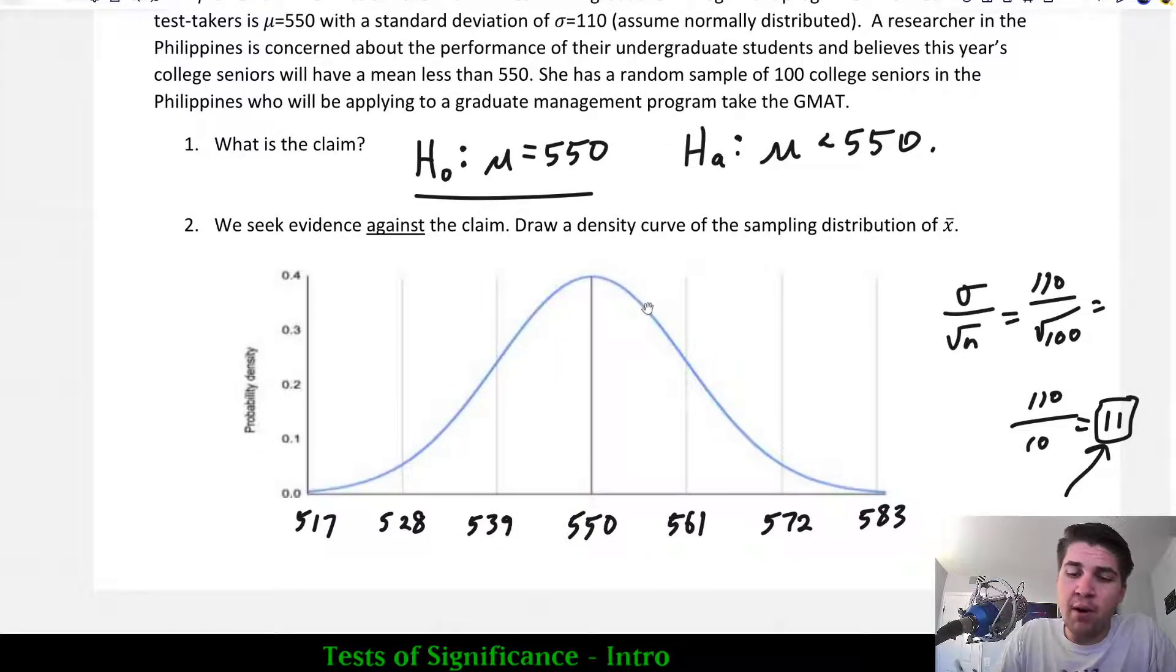If we're marking these on our distribution, X1-bar would be right here. Let's say she took one sample of 100 students. Those 100 students had an average mean GMAT score of 539. And the second sample was even worse, X2-bar. The smaller sample size would be stronger evidence that the claim is not true and that the alternative hypothesis is true. The first set of data would be less evidence. And my point is that we can actually determine the probability of the test by doing the normal distribution math.